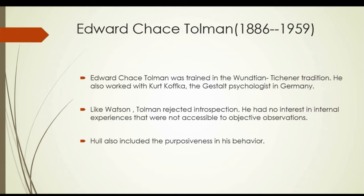Tolman's most useful contribution to psychology is the concept of the intervening variable. As a behaviorist, he suggested that the causes of behavior consist of five independent variables: 1. Environmental stimuli, 2. Physiological drive, 3. Heredity, 4. Previous training, 5. Age.